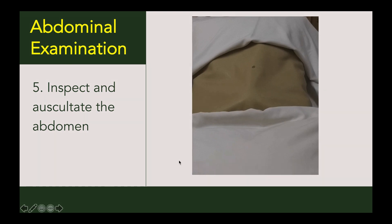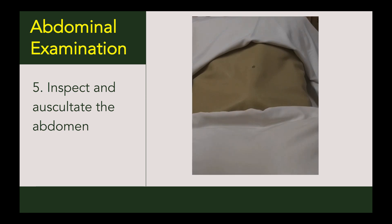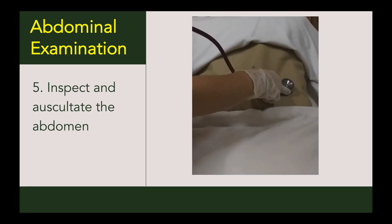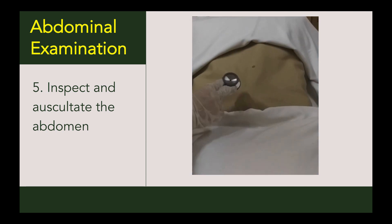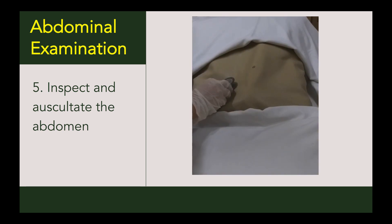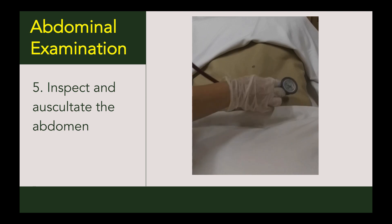Next, we have auscultation. Auscultation is recommended to precede palpation or percussion so as not to stimulate or depress resting bowel activity. This is accomplished by placing the diaphragm or the bell of the stethoscope lightly in close contact with the abdominal wall. We have to auscultate all four quadrants of the abdomen. Auscultation aids in the assessment of intestinal peristalsis especially when using the diaphragm. We can also use the bell of the stethoscope to hear signs of bruits.